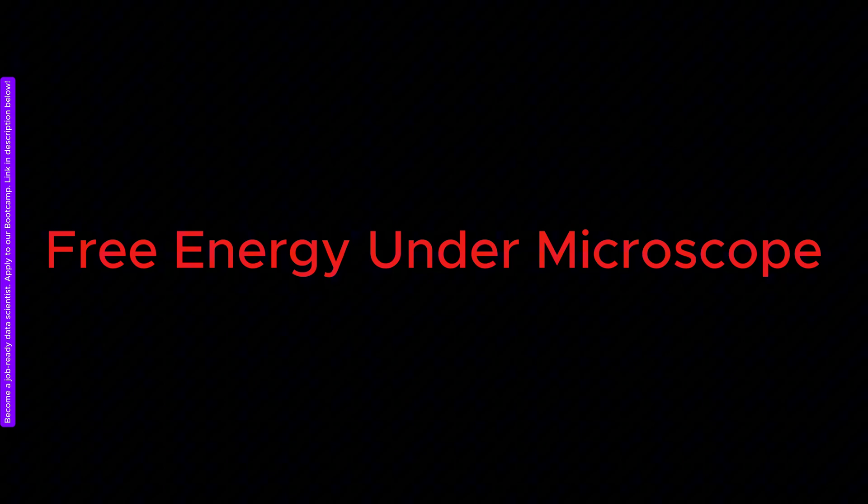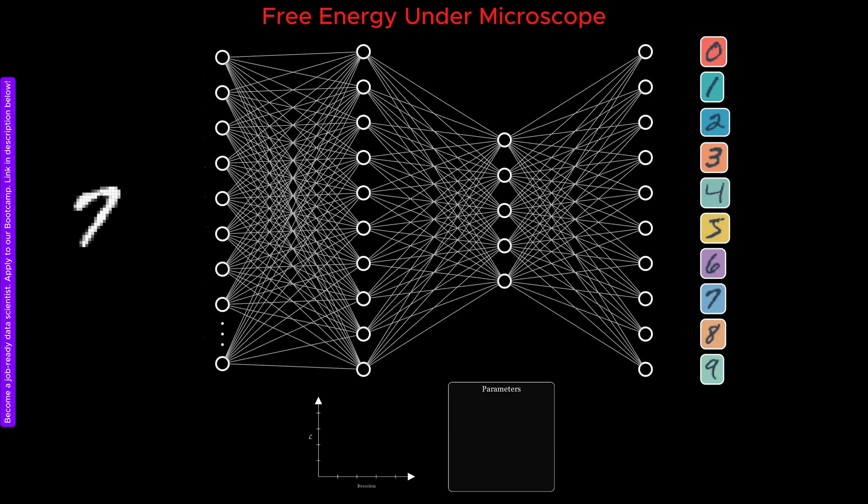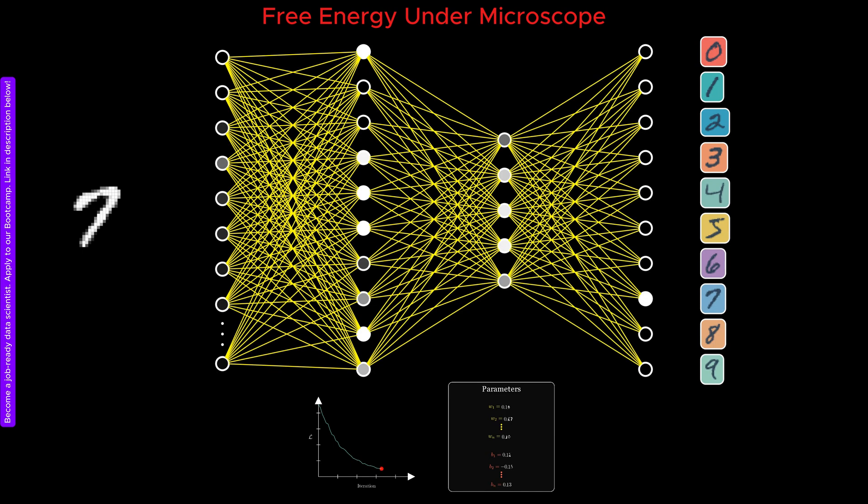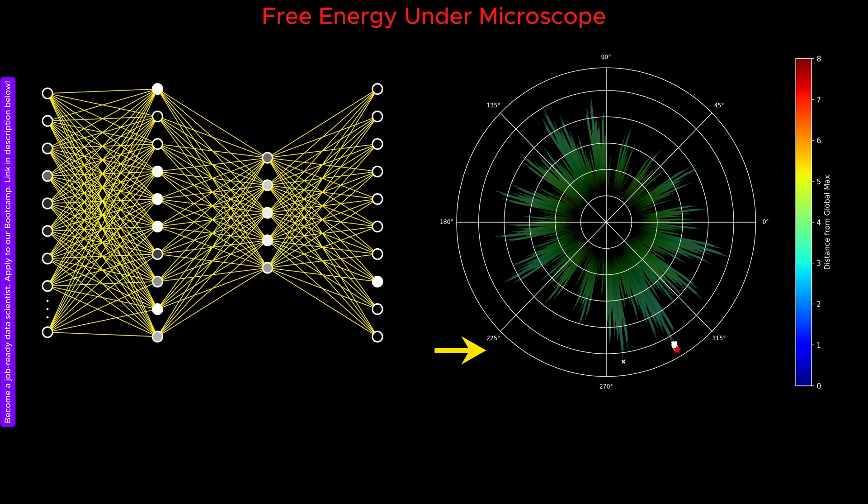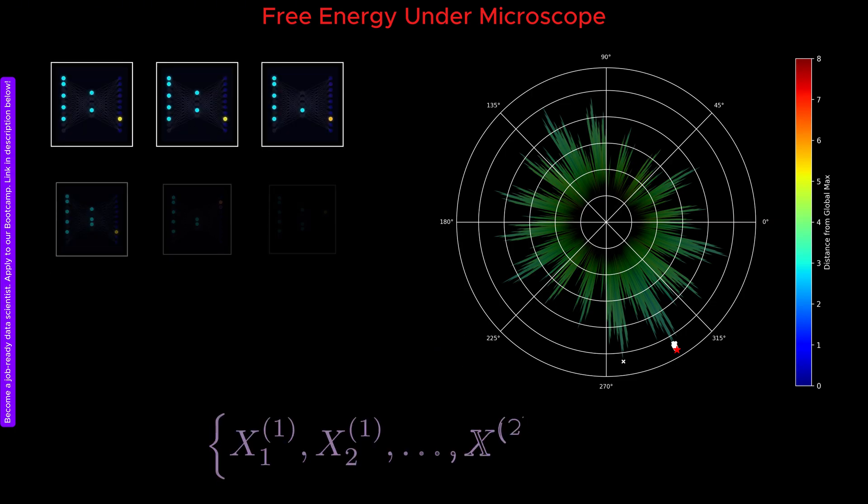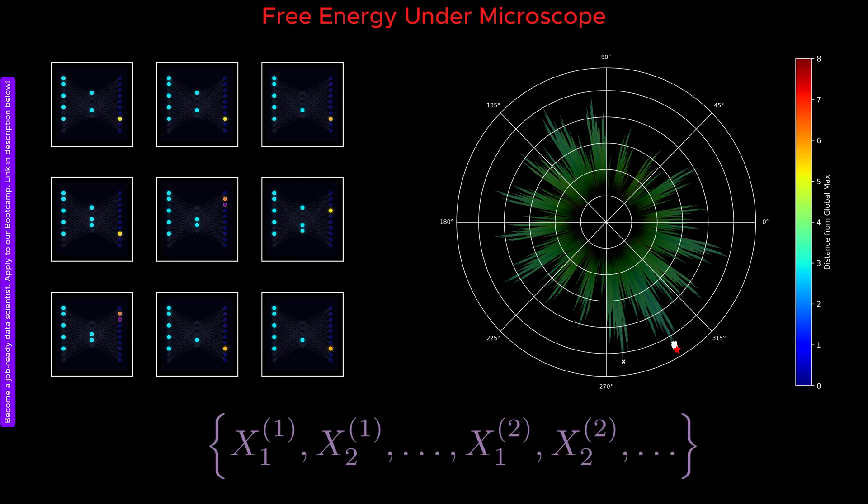Earlier in the video, we discussed that we used conventional machine learning methods to find the optimal values of the free parameters, namely the weight vectors and the biases. To visualize the landscape of the free energy, we construct a grid of all possible states of the neurons in the network, meaning all possible configurations of neuron activations across the layers.